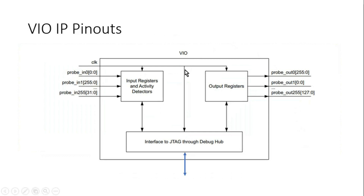This diagram reveals a bit of the inside picture of the VIO IP. As I mentioned earlier, we can have any number of input probes of different widths. Similarly, we can have output probes of different widths. And on the other side, we have a JTAG connection through the debug hub.